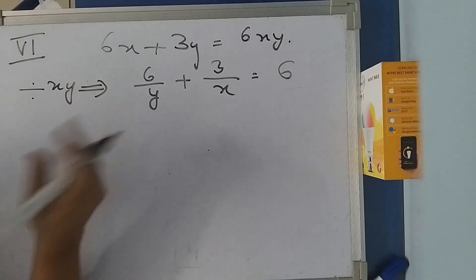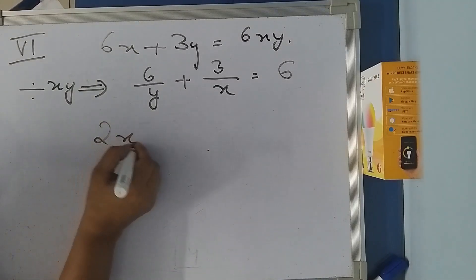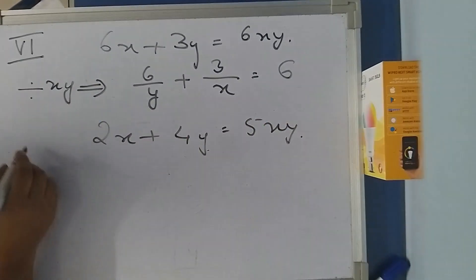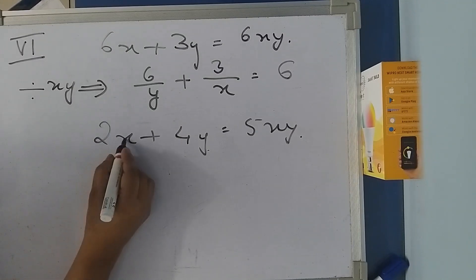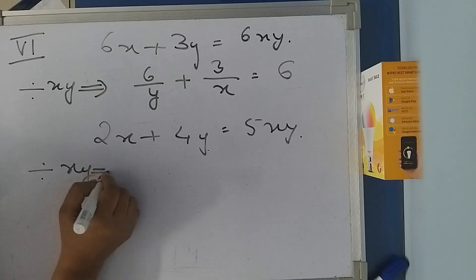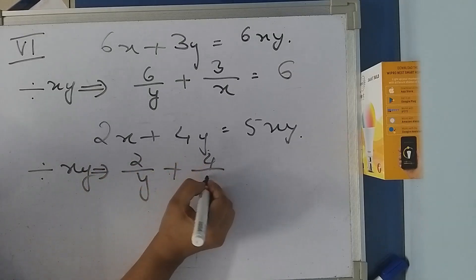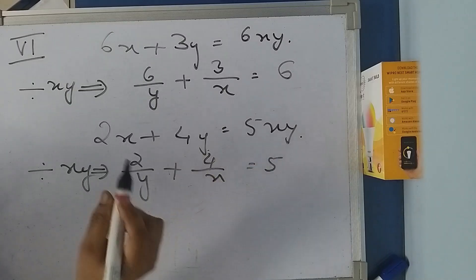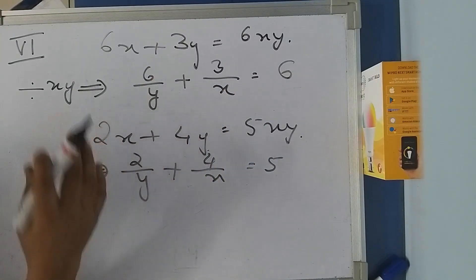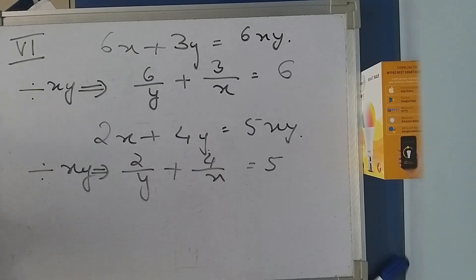This is again in that form. The second equation is 2x + 4y = 5xy. Dividing throughout by xy, I get 2/y + 4/x = 5. Now you can substitute 1/x as a and 1/y as b, solve for a and b, then find x and y. After this you can try it.